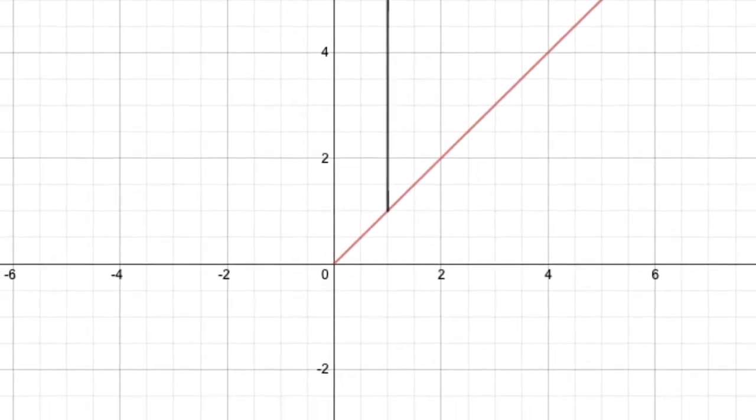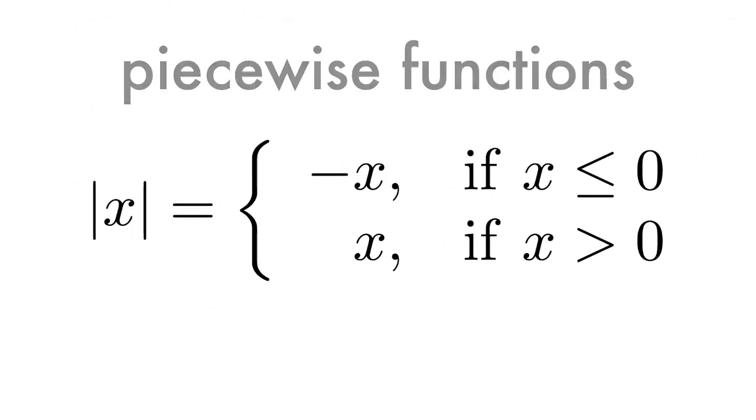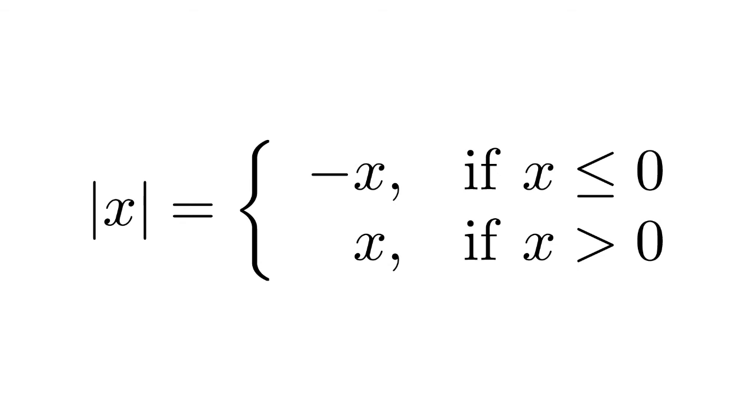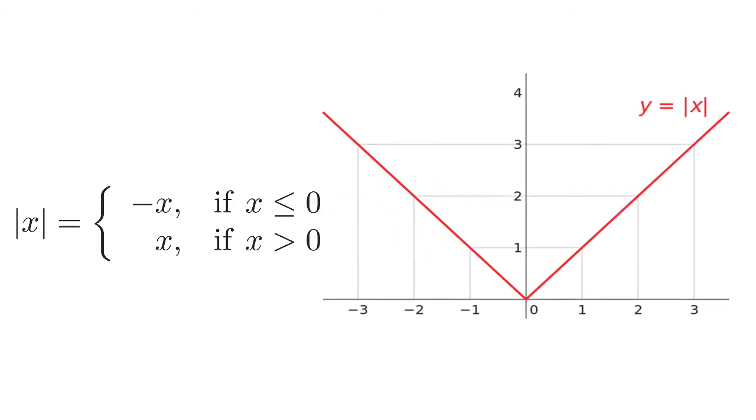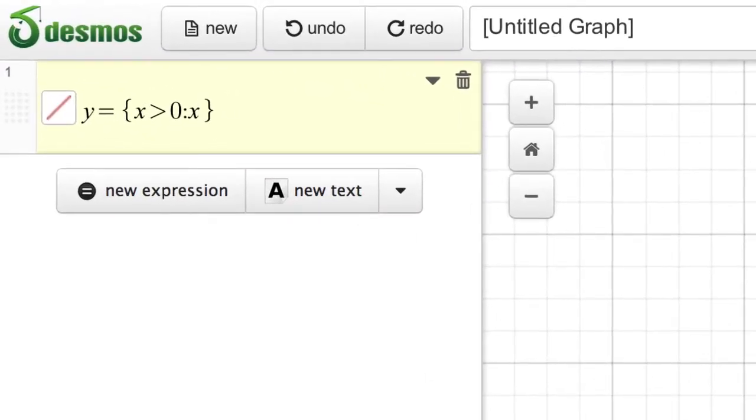Restricting domain and range can also be used to graph piecewise functions. Here's the piecewise function of the absolute value of x. We can easily edit our first graph to show this function. We already have the first condition x greater than zero colon x.